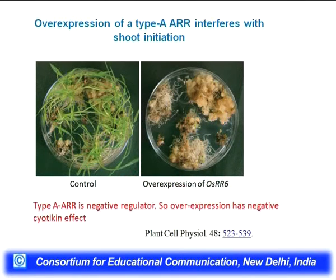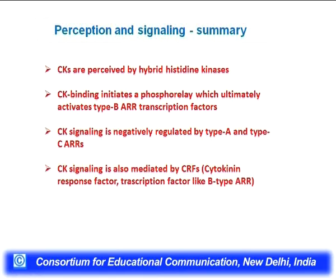Type A ARRs are negative regulators. If you overexpress a negative regulator, shoot growth is inhibited because cytokinin is required for shoot growth — overexpression lines are defective in making shoot growth. Summary of perception and signaling: cytokinins are perceived by hybrid histidine kinases. Cytokinin binding initiates a phosphorelay which ultimately activates type B ARR transcription factors. CK signaling is negatively regulated by type A and type C ARRs. CK signaling is also mediated by CRFs (cytokinin response factors) and transcription factors like type B ARRs.